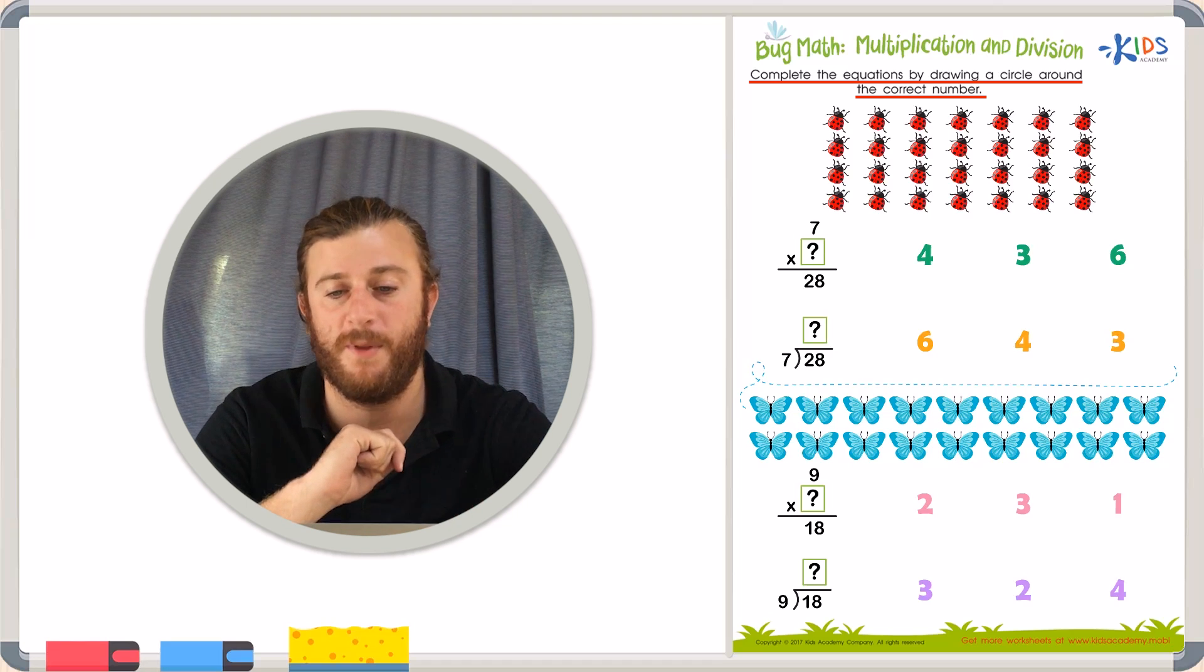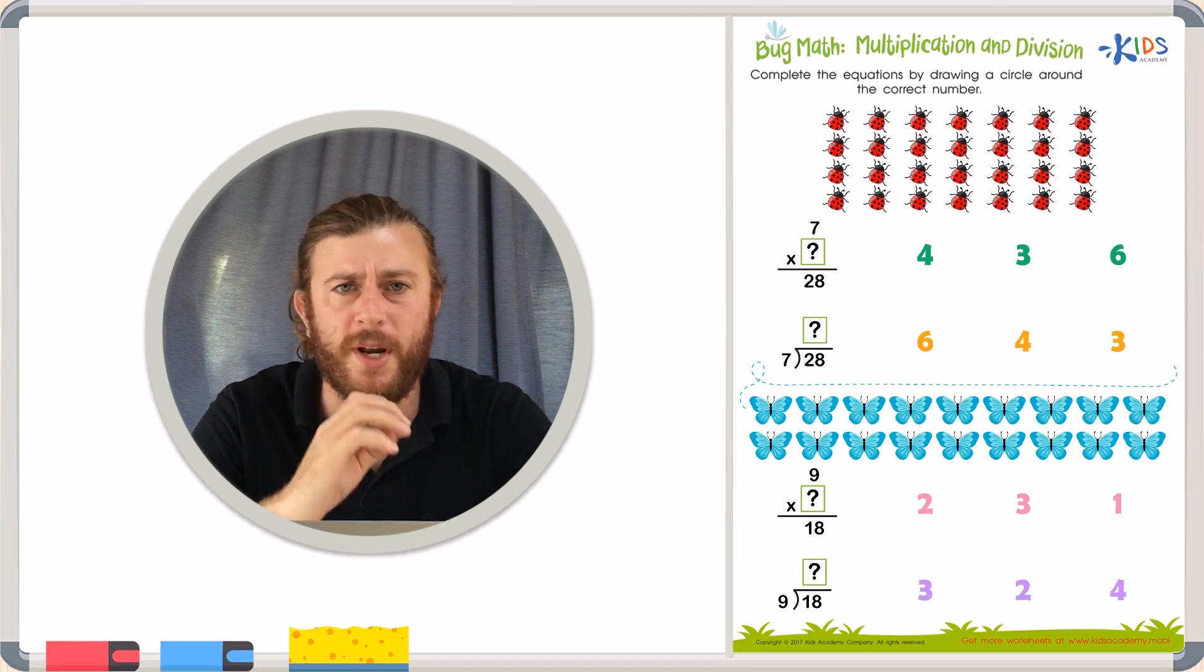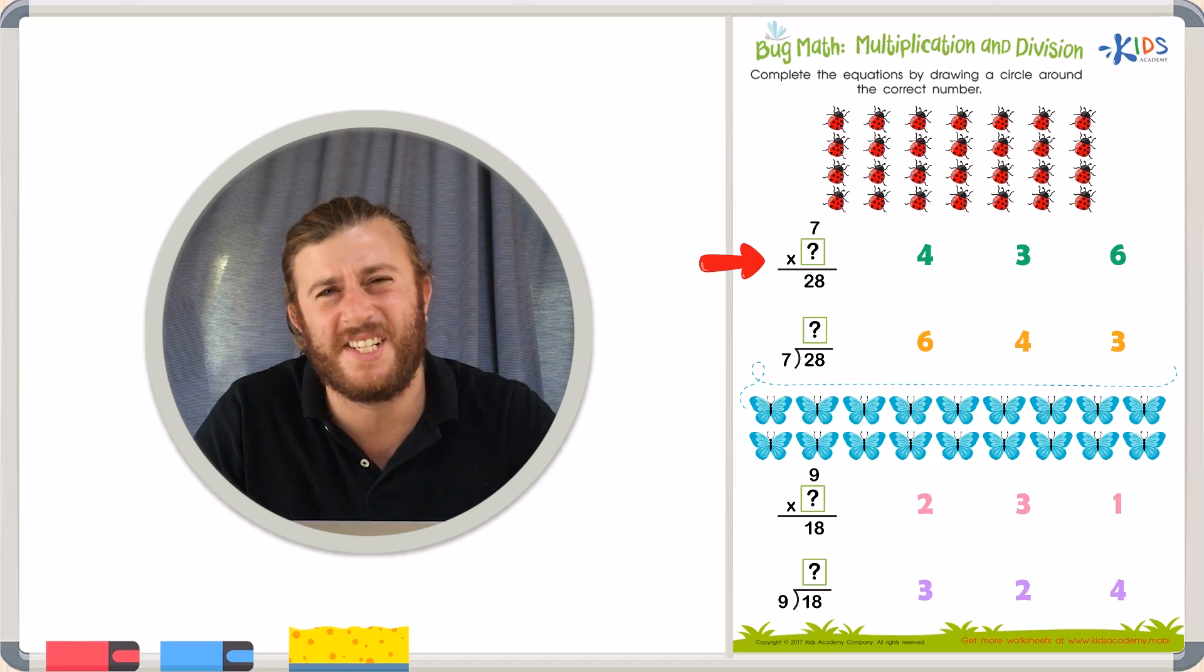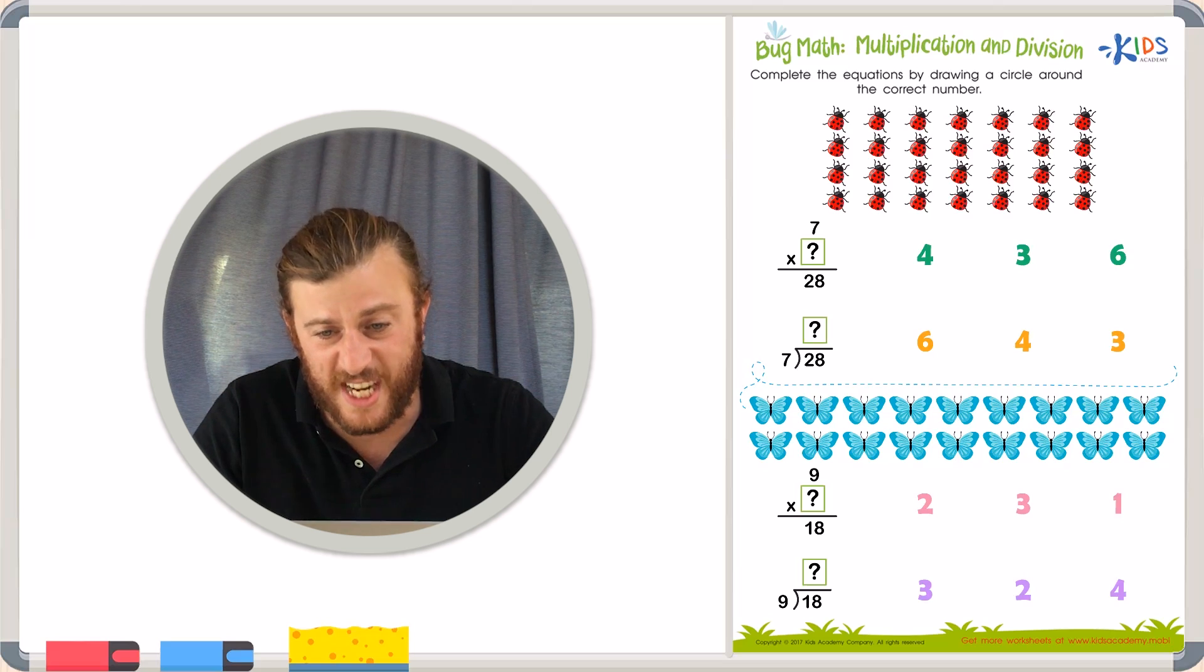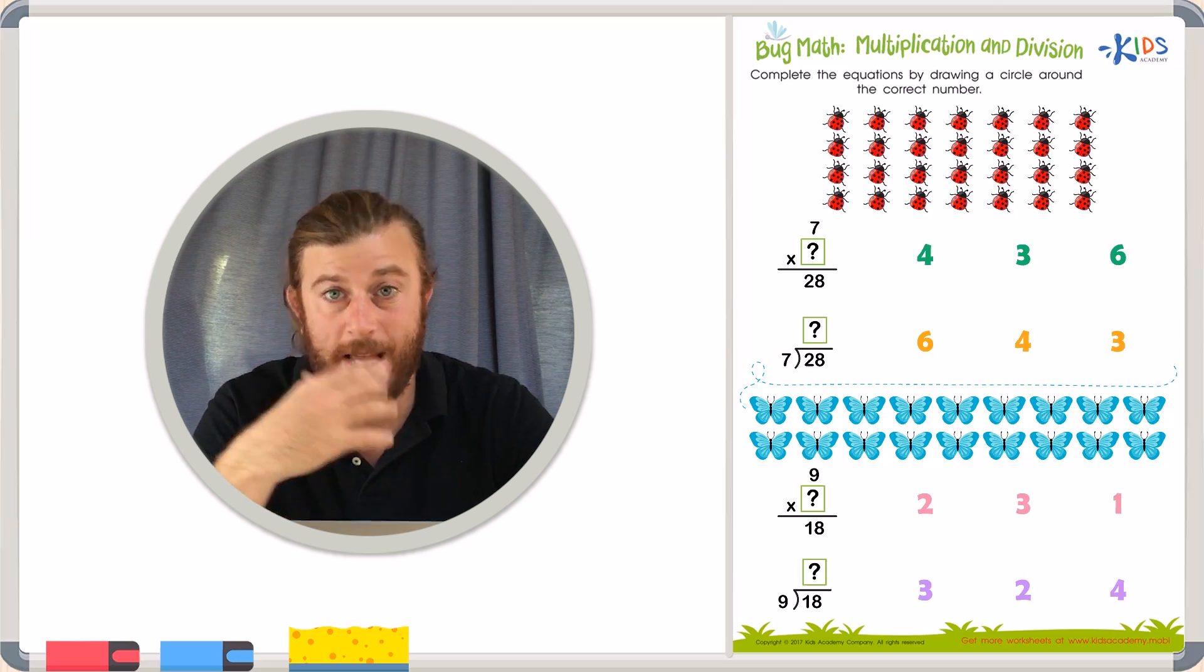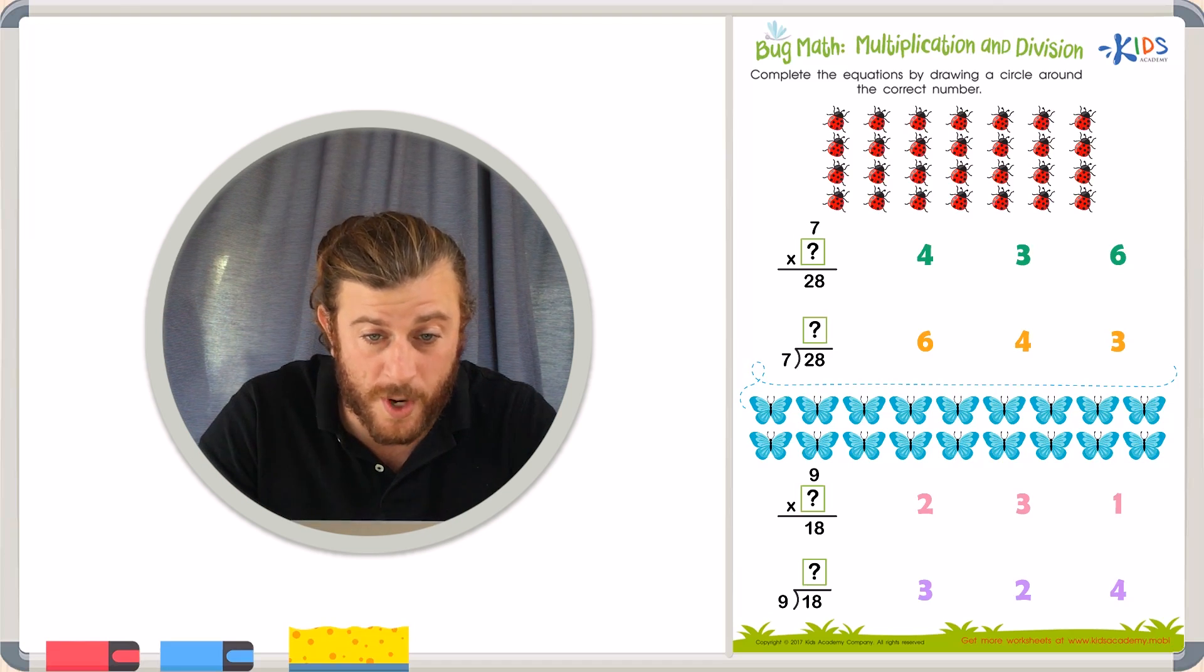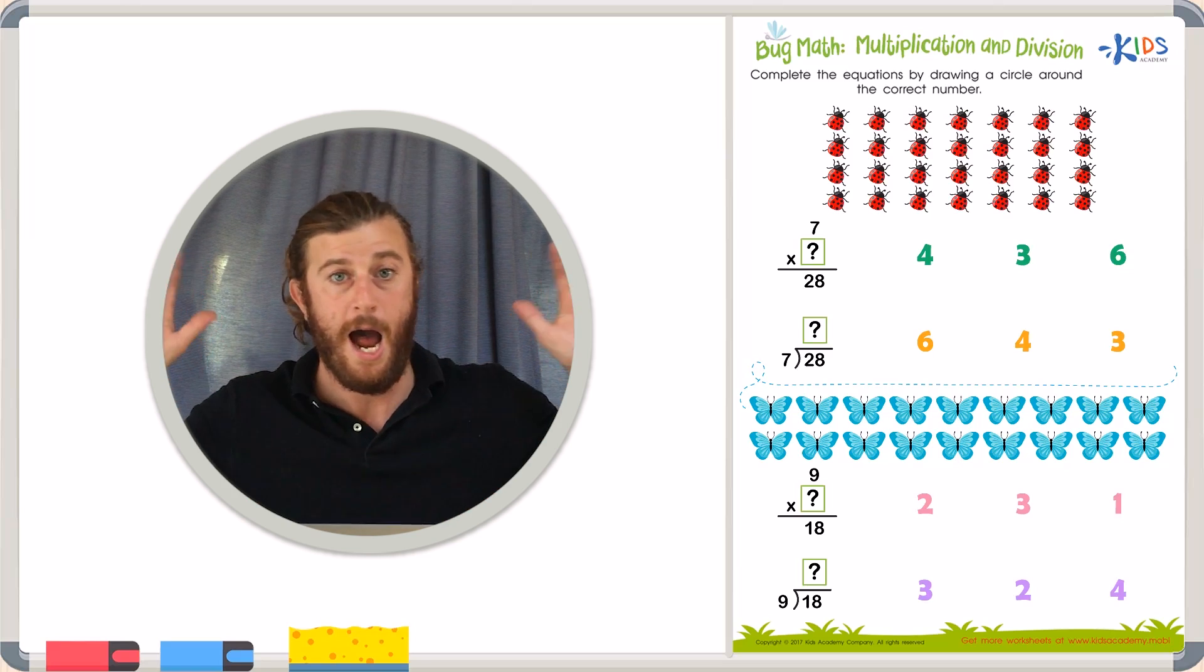Okay, in this problem the first thing I see is a picture of a bunch of bugs. Then I also see two equations. The first equation I see is 7 times something equals 28. The second equation I see is 28 divided by 7 equals something. When I look at these problems I know I'm solving for the unknown number. This is kind of like that big scary word, algebra.